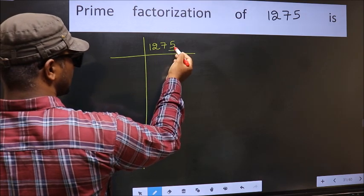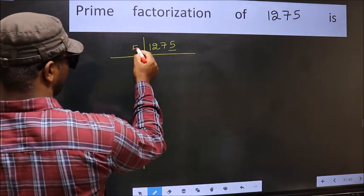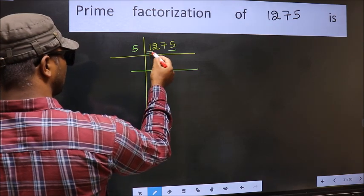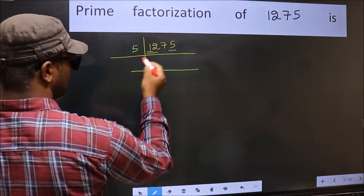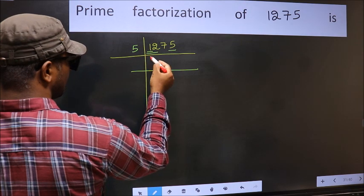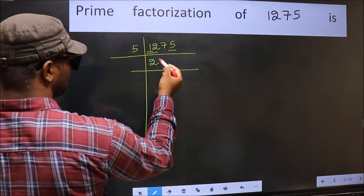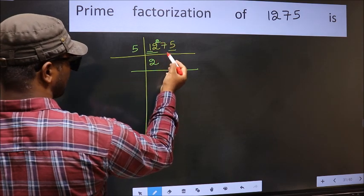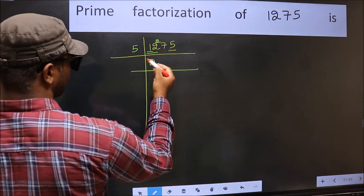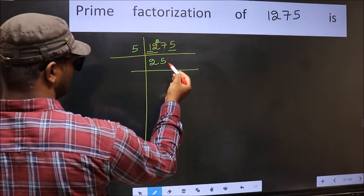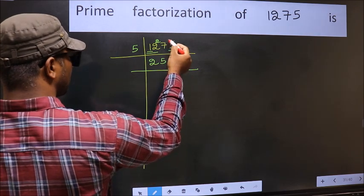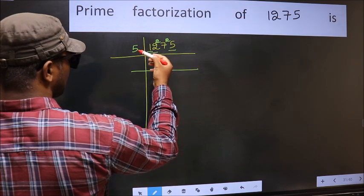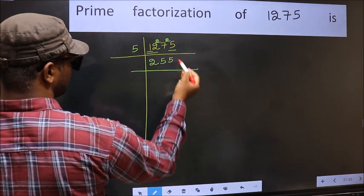For this number, last digit is 5, so take 5 here. First number 1 is smaller than 5, so take 2 numbers: 12. A number close to 12 in the 5 table is 5×2=10. 12-10=2, carry forward 27. A number close to 27 in the 5 table is 5×5=25. 27-25=2, carry forward 25. When do we get 25 in the 5 table? 5×5=25.